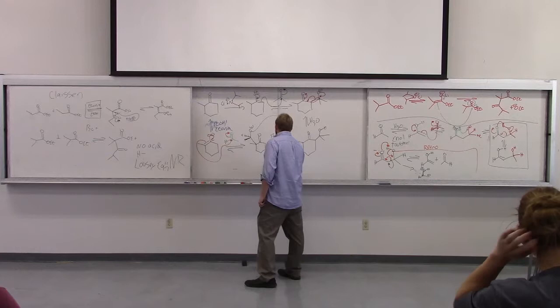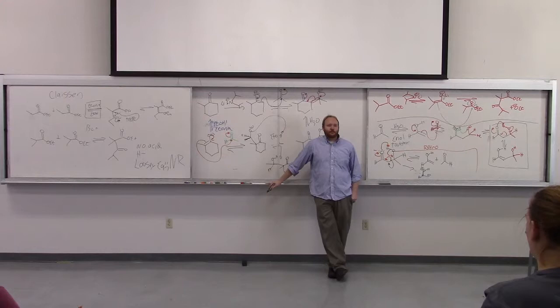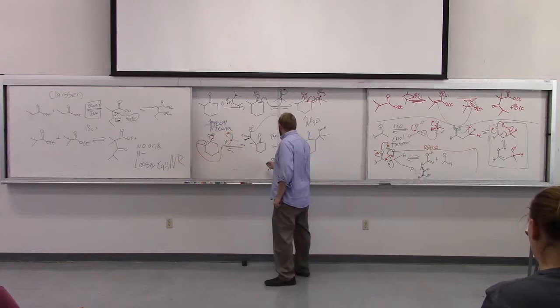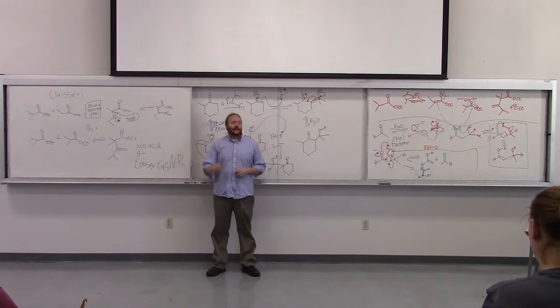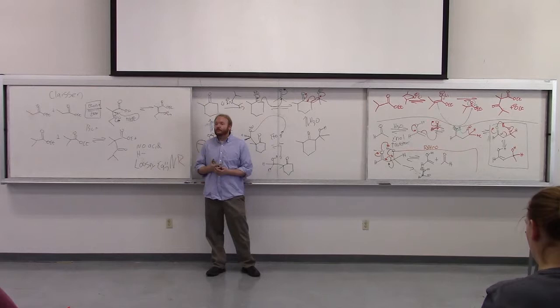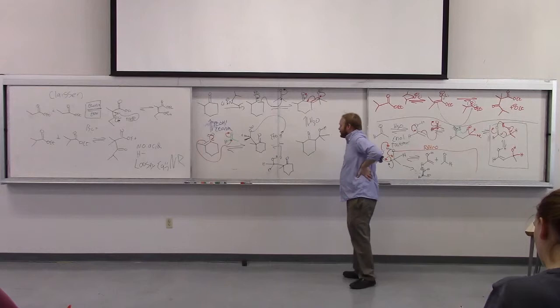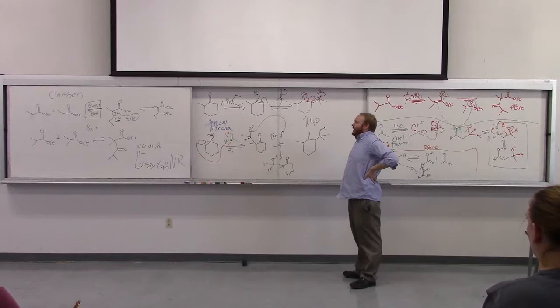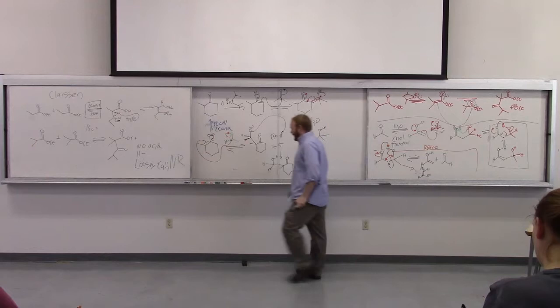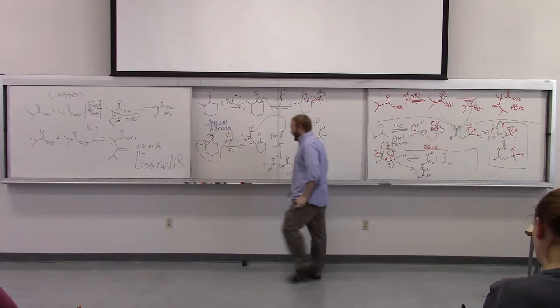We formed a chiral center with this example—the aldol reaction can be used to make chiral centers. In this class, the stereochemistry question is: is there stereochemistry or not? Is it chiral or not? Yes, you can also do the acidic mechanism with ketones. If you take acetone and make it acidic, some interesting things happen—the acetone will actually polymerize, going through this kind of aldol mechanism.